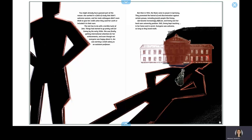Things had started to go pretty well for Emmy in the early 1930s. She was finally getting international attention for her achievements, and even though not everyone was happy about it, she was earning a small salary as an assistant professor.